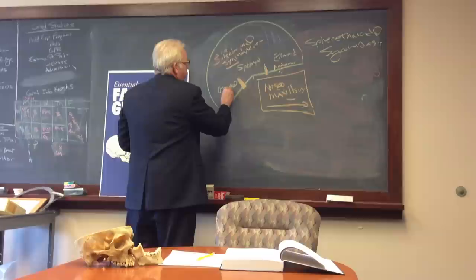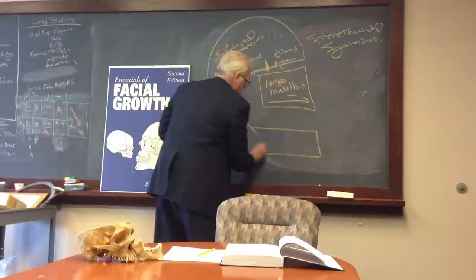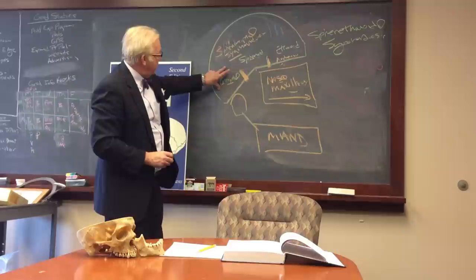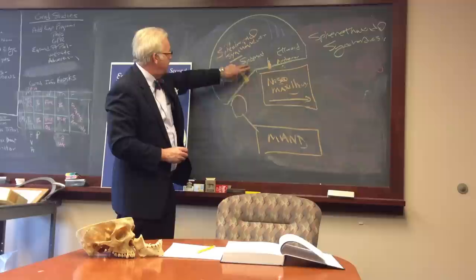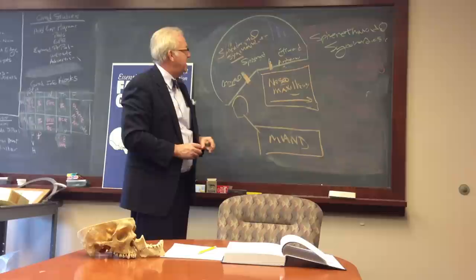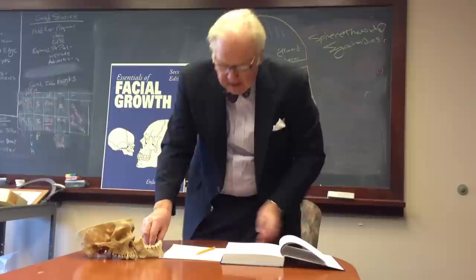The posterior cranial base is associated with the mandible. The posterior cranial base has the temporomandibular joint articulation. Growth of the sphenooccipital synchondrosis affects the overall position of the mandible and the growth of the mandible. We've got sphenooccipital synchondrosis related to the mandible, sphenoethmoidal synchondrosis and the anterior cranial base related to the nasal maxillary complex. I think that's the most important aspects that you need to know.